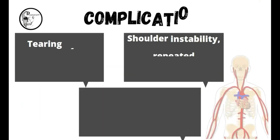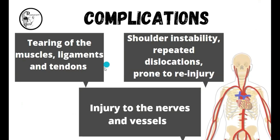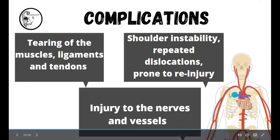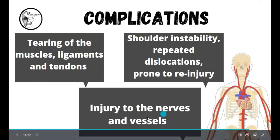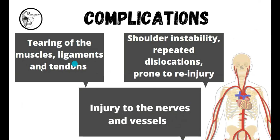The complications of shoulder dislocation include: injury to the nerves and vessels, as the dislocated bone can injure nearby neurovascular structures; tearing of muscles, ligaments, and tendons covering the shoulder joint; and shoulder instability with a high chance of repeated dislocations. Once a dislocation occurs, the risk of recurrence is very high — this is a significant complication.